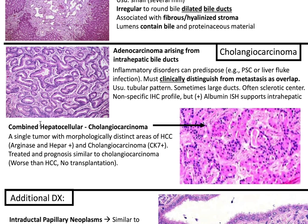Cholangiocarcinoma. This is adenocarcinoma arising from intrahepatic bile ducts. Inflammatory disorders can predispose to cholangiocarcinoma, including primary sclerosing cholangitis (PSC) or liver fluke infection. You must clinically distinguish it from metastasis. Architecturally, usually a tubular pattern; sometimes large ducts with a sclerotic center. The IHC profile is nonspecific, but positive albumin in situ hybridization supports intrahepatic cholangiocarcinoma. Combined hepatocellular cholangiocarcinoma is a single tumor with morphologically distinct areas of HCC (arginase and HepAR positive) and cholangiocarcinoma (CK7 positive). It's treated similarly to cholangiocarcinoma, prognosis is worse than HCC, and no transplantation is performed.